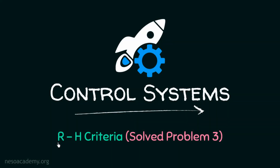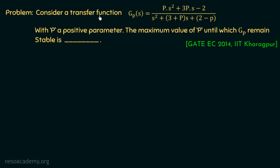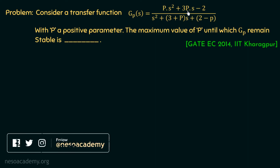In this presentation, we are going to discuss and solve problem 3 on Routh-Hurwitz criteria. Consider a transfer function G_P(s) equal to P(s² + 3P·s − 2) over (s² + (3 + P)·s + (2 − P)), where P is a positive parameter. The maximum value of P until which G_P remains stable is to be determined. This is a numerical answer type question asked in GATE EC 2014, given by IIT Kharagpur.